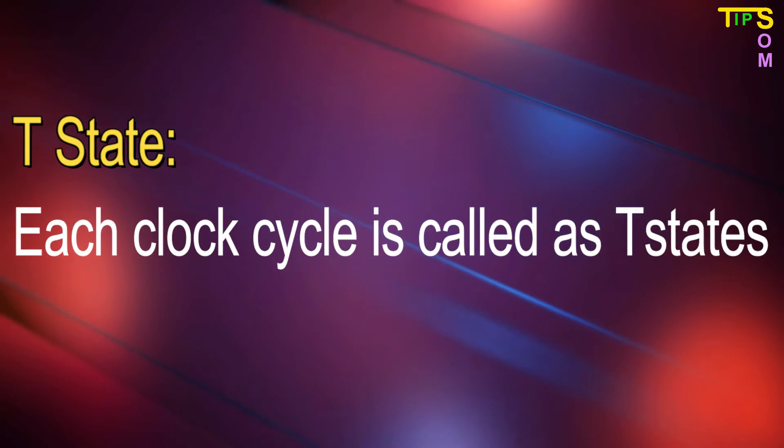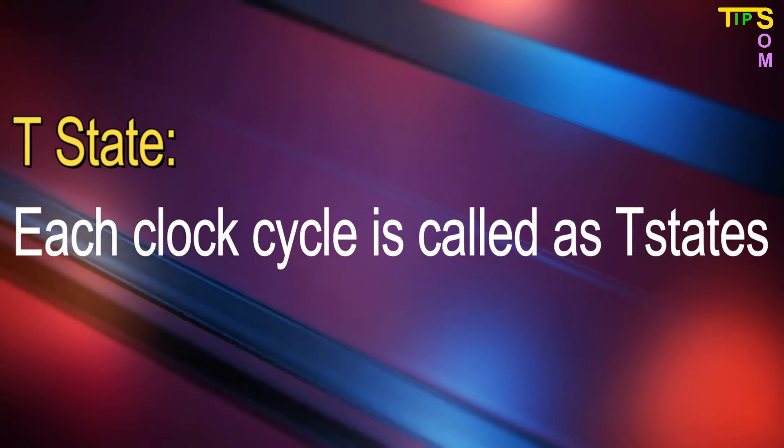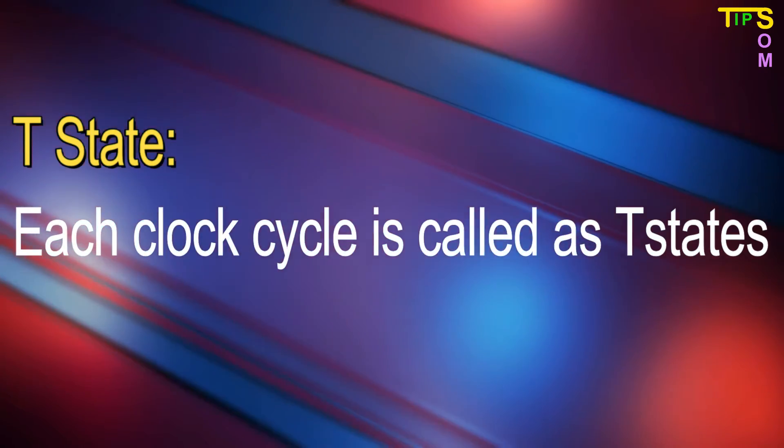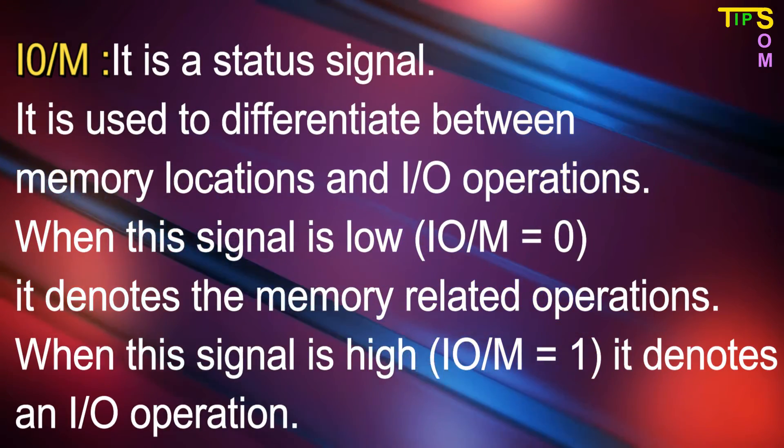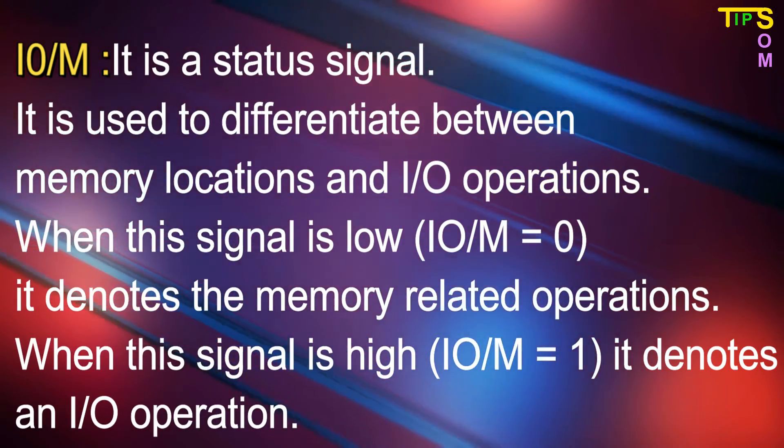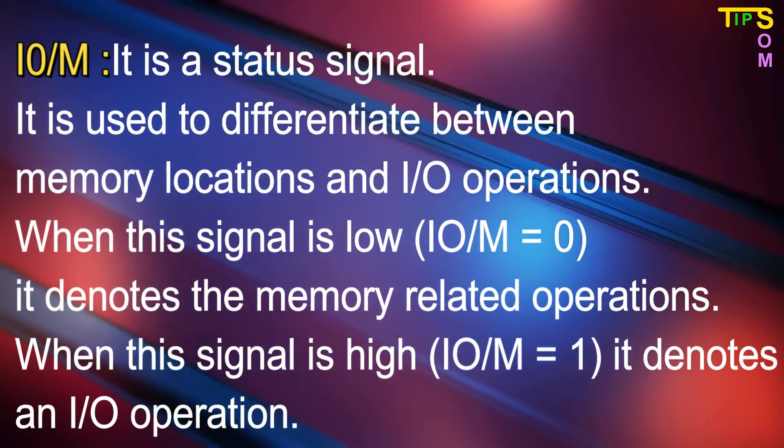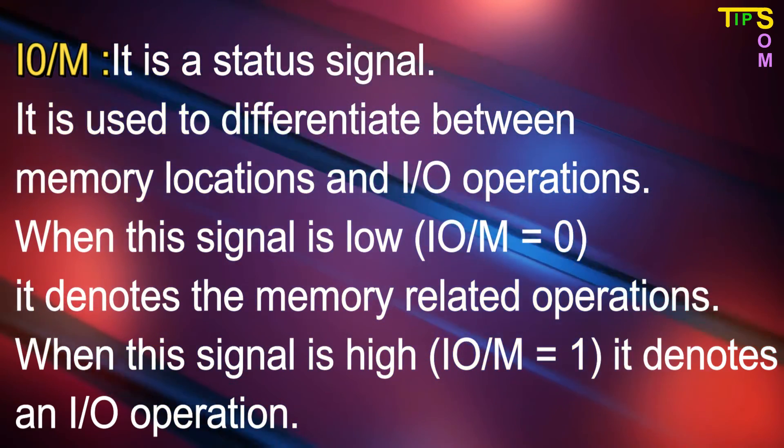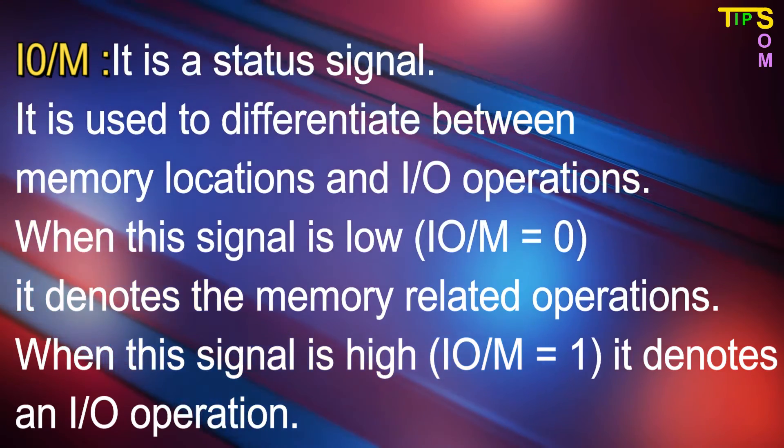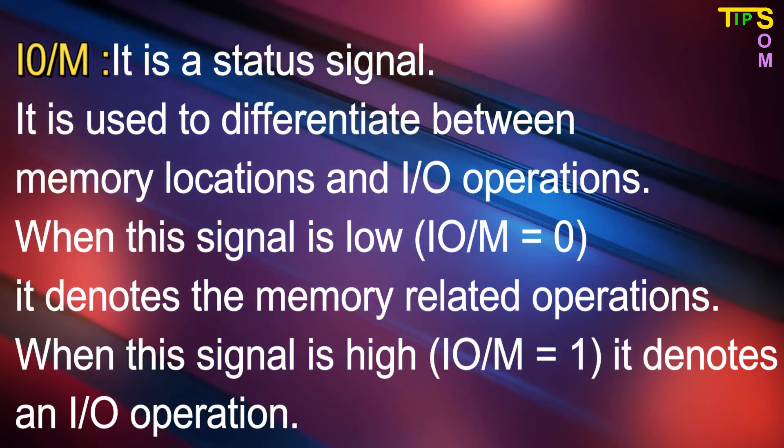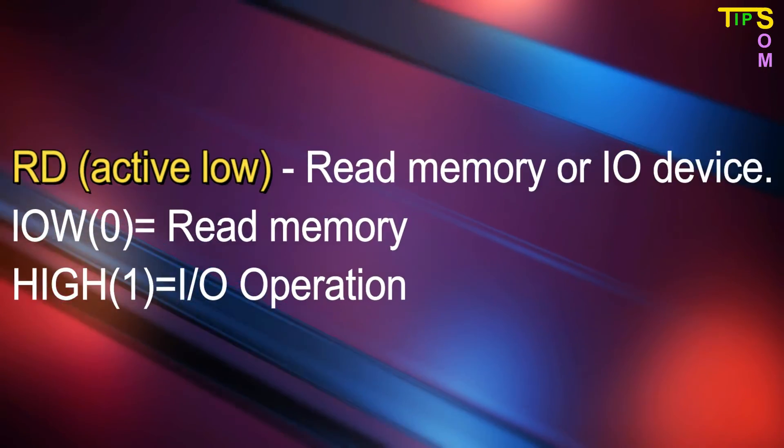Next is the T-State. This is the Clock Cycle - it is called T-State. Every instruction's timing is defined by these Clock Cycles or T-States. Next one is IO slash M bar. This is the status signal and it is used to differentiate between the memory location or the input-output operation. When it is low, it denotes the memory operation is going on, and when it is high, it denotes input-output operation.